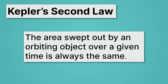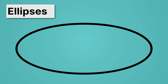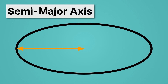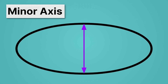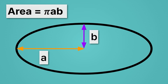Now, because we're dealing with the area of an ellipse, we need to learn to calculate this. An ellipse is like a stretched circle. The longer distance is called the major axis, and half of it is the semi-major axis. The shorter distance is the minor axis, and half of it is the semi-minor axis. If you take the semi-major axis (A) and the semi-minor axis (B) and multiply them together times pi, you get the area. So the area of an ellipse = π × A × B.